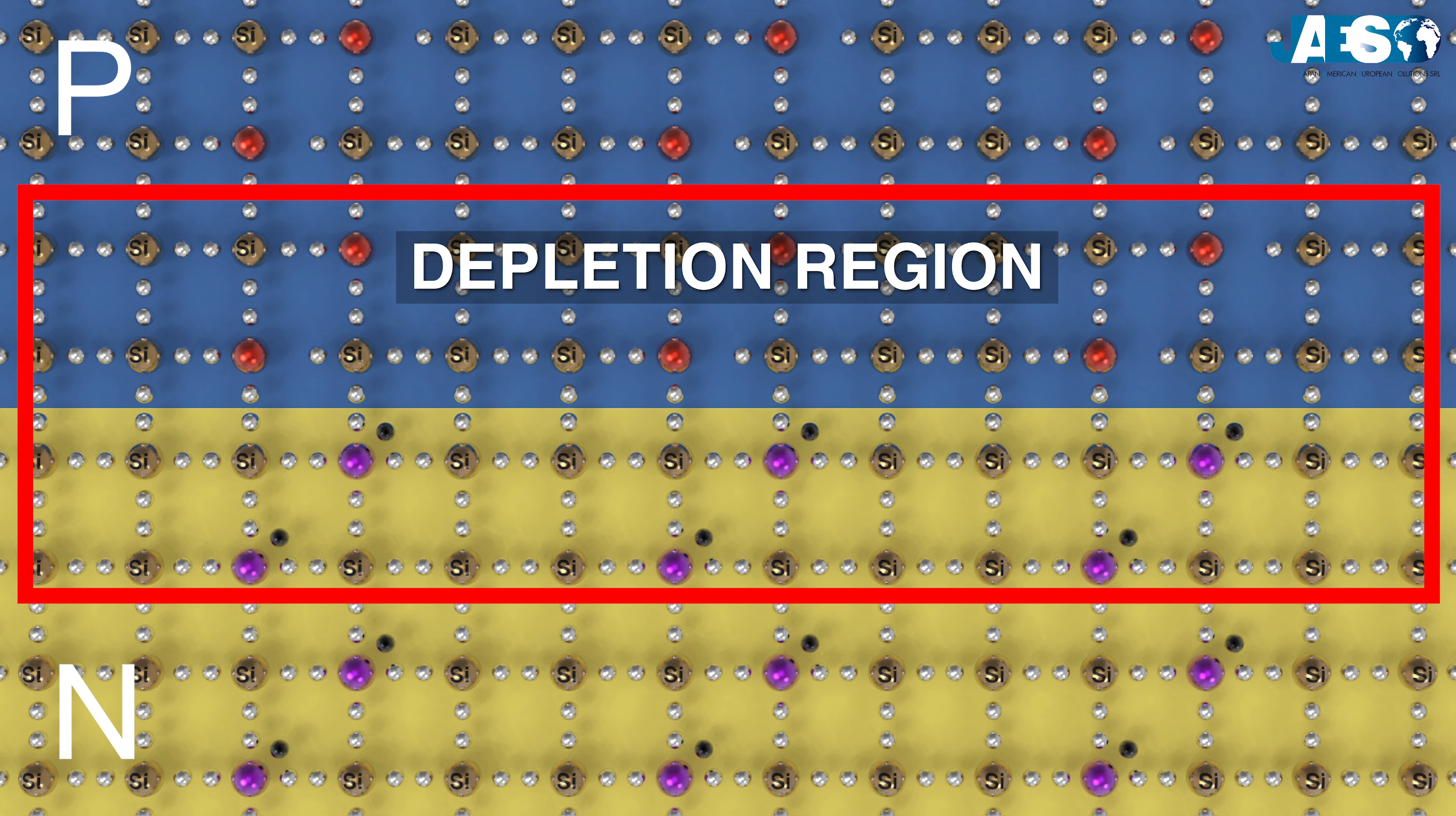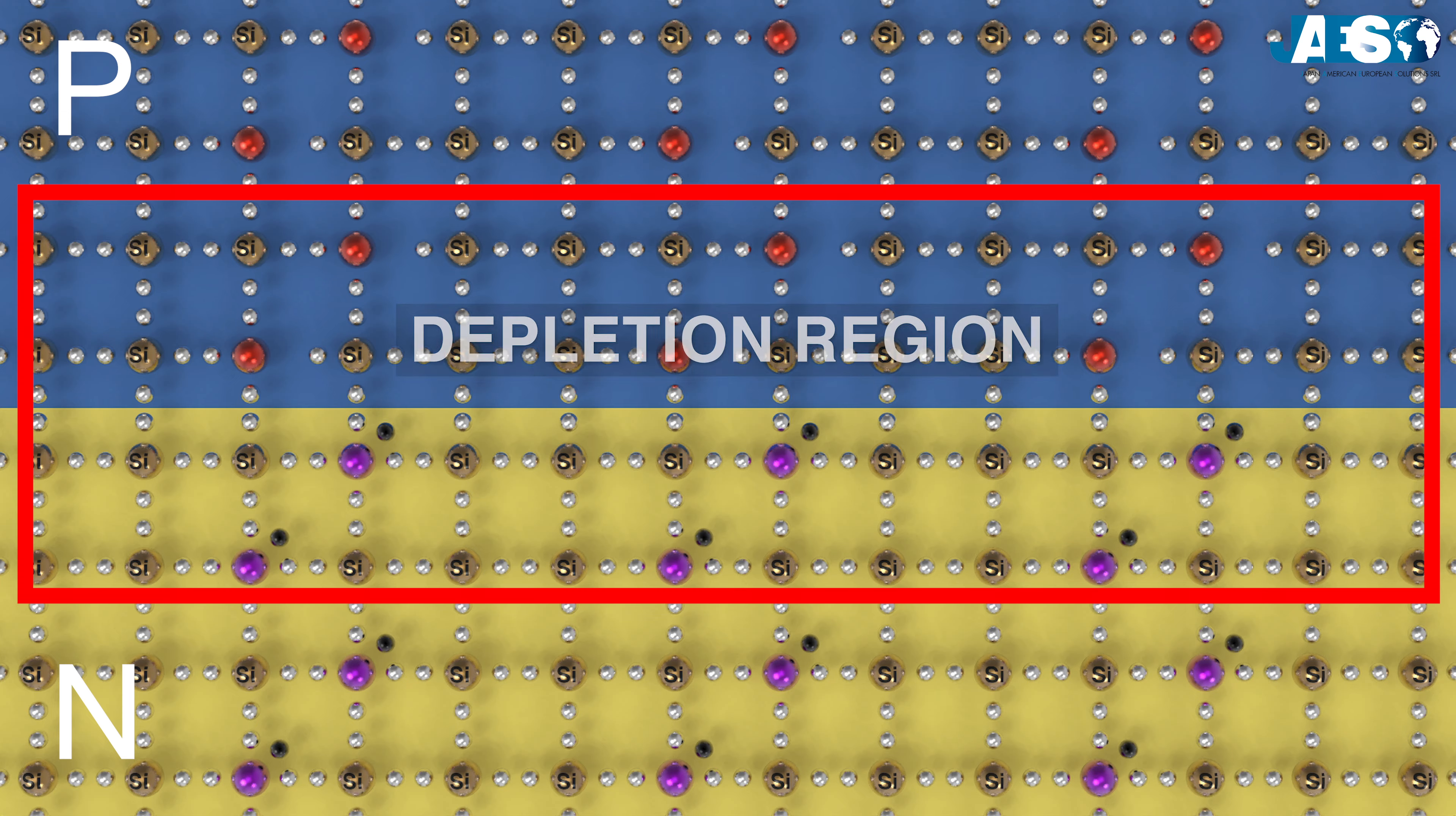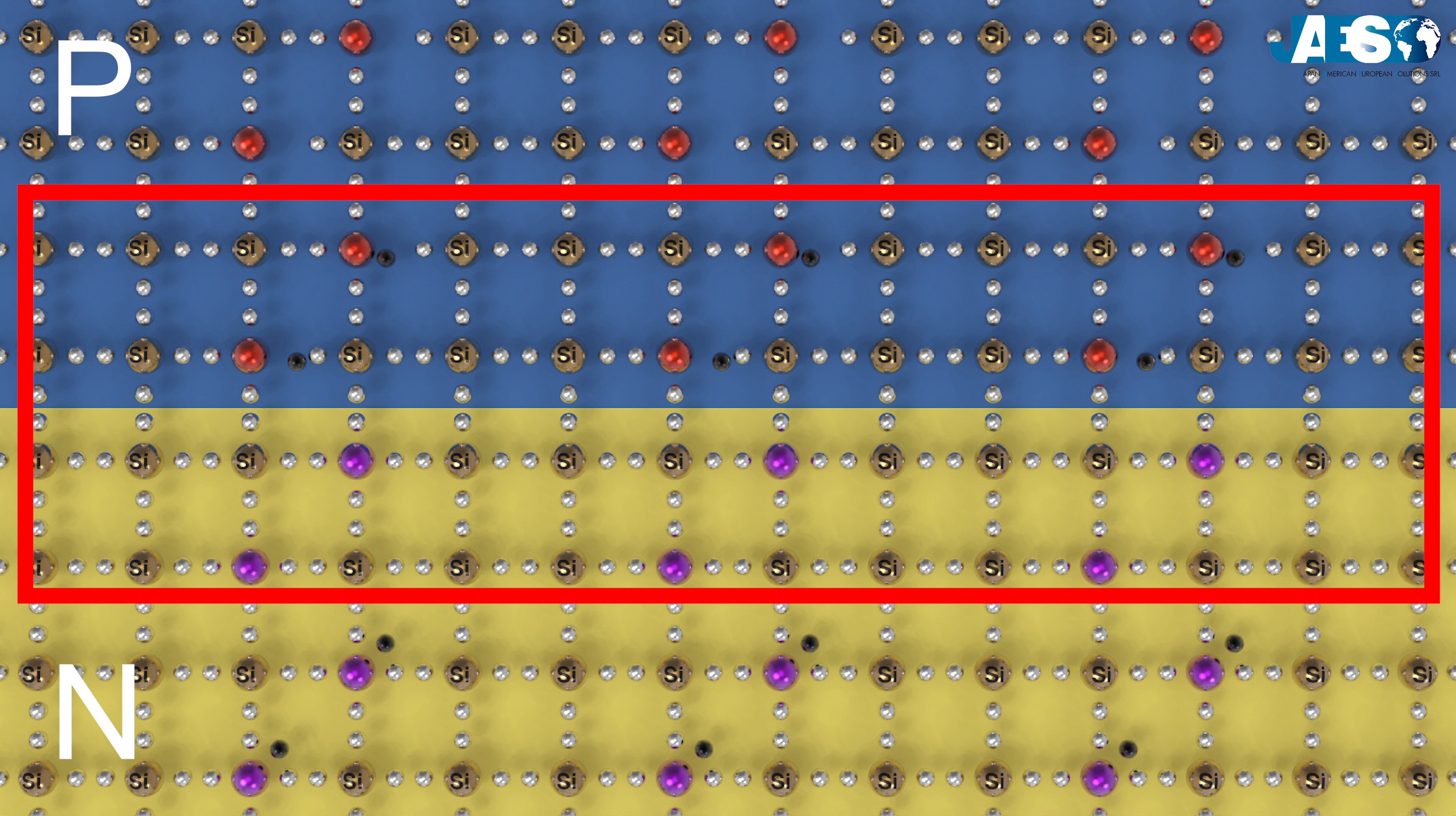The separation zone is called depletion region. In this thin layer, free electrons of the N layer will occupy the holes of P layer, creating a new region where there aren't any free electrons or holes.